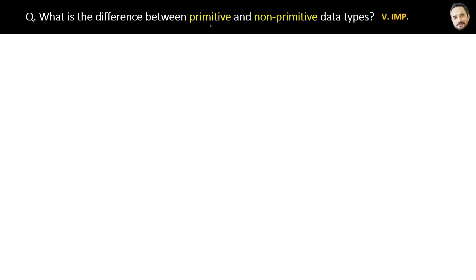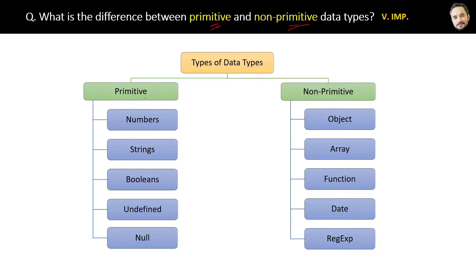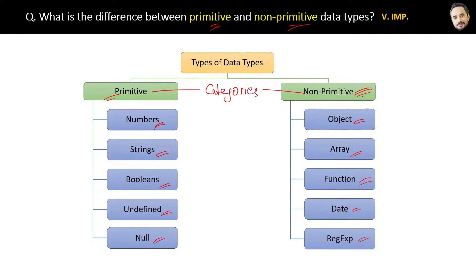What is the difference between primitive and non-primitive data types? This is a very important question. Here is the list of data types in JavaScript. Primitive and non-primitive are the categories of data types. The actual data types are number, string, boolean, undefined, etc., which come under primitive data types. Similarly, object, array, function, date, and regex fall under the non-primitive category. These two categories were created because they have some fundamental differences.